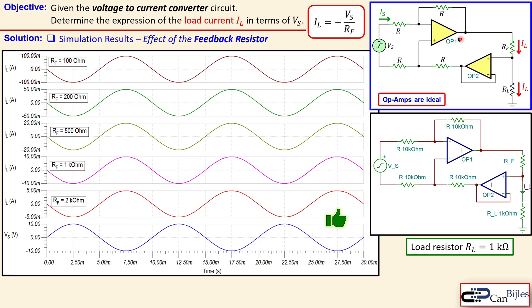That concludes our example considering the voltage to current converter using this op-amp configuration. If you have any questions or comments, please let me know and I will try to answer them as soon as possible. See you next time in another video.